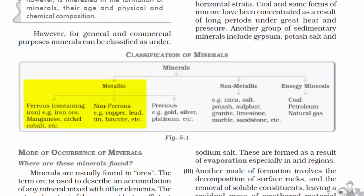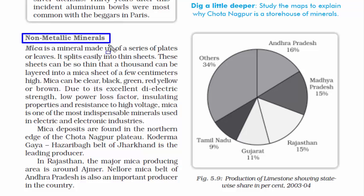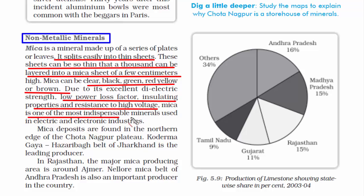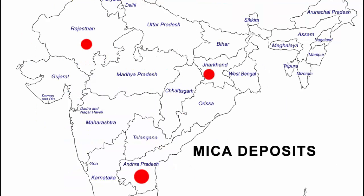Now it's time to read about non-metallic minerals. The first non-metallic mineral is mica. It splits easily into thin sheets — these sheets can be so thin that a thousand can be layered into a mica sheet of just a few centimetres. The colour of mica ranges from black, green, red, yellow, or brown. It is a necessary mineral used in electrical and electronic industries because of its resistance to high voltage and insulating properties. Mica deposits are found in the regions of Chhotanagpur Plateau, Jharkhand, Rajasthan, and Andhra Pradesh.